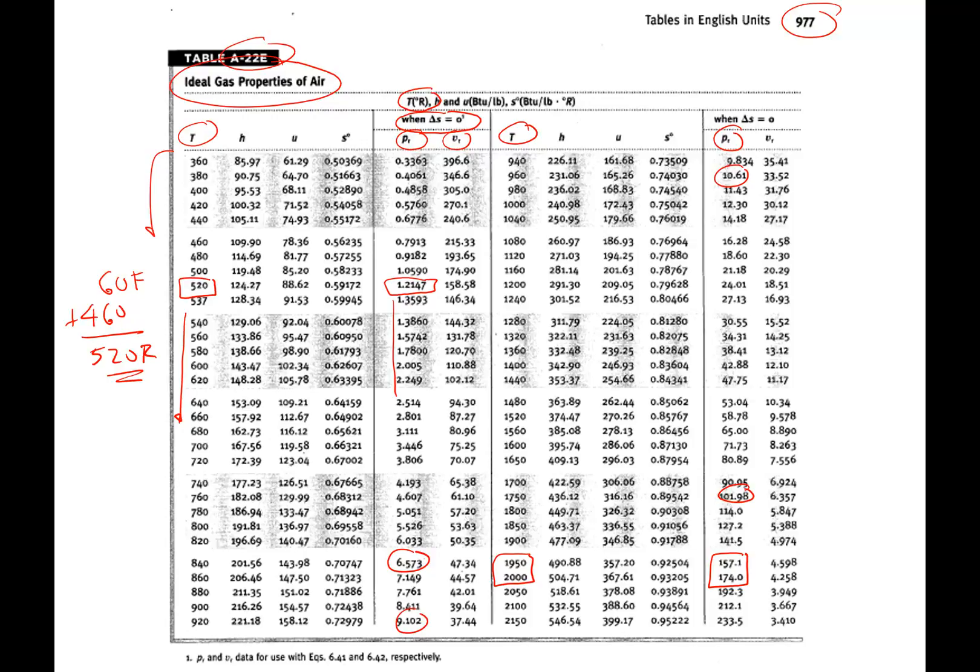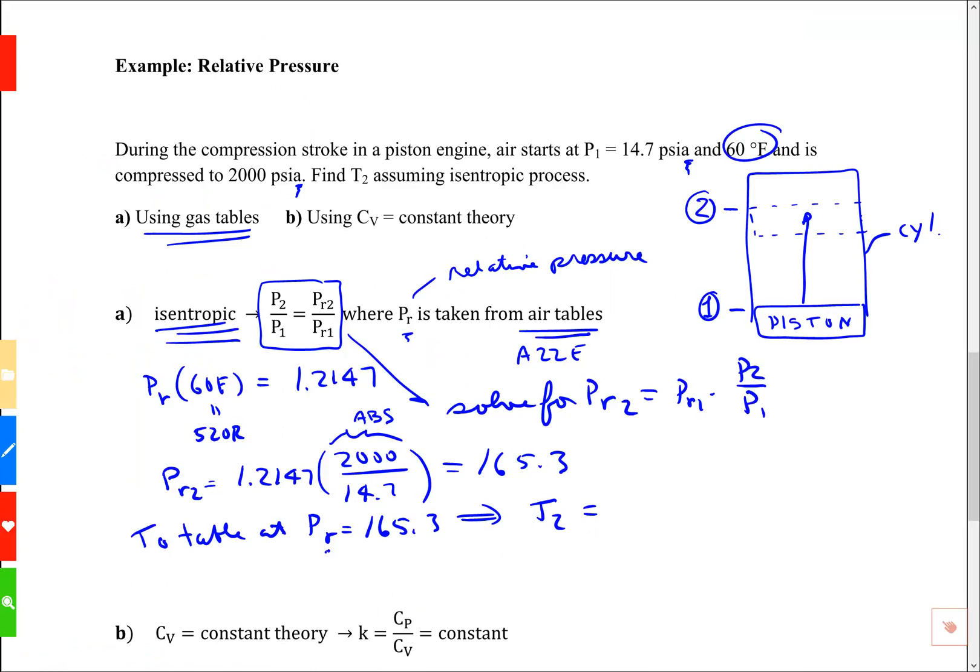If we interpolate, we'll find that T2 is 1973 Rankine, which is the same as 1513 Fahrenheit. So there's the answer for T2 using the air tables. The temperature gets quite warm with that amount of compression.